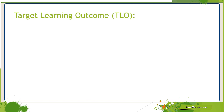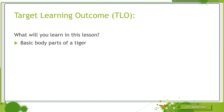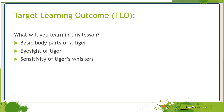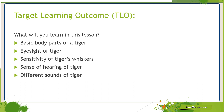What do you learn today? You will learn the following things. Number one, basic body parts of a tiger. Number two, eyesight of tiger. Number three, sensitivity of tiger's whiskers. Number four, sense of hearing of tiger. Number five, different sounds of tiger. And lastly, how do tigers mark their area.